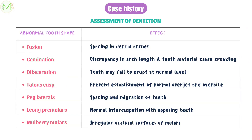Let's see what abnormal tooth shapes are and what effect they have orthodontically. Fusion of teeth will lead to spacing in the dental arches. Gemination will lead to discrepancy in arch length and tooth material, causing crowding. In dilaceration, the tooth may fail to erupt at the normal level. In the case of talon's cusp, it prevents establishment of normal overjet and overbite. Peg laterals will cause spacing and migration of teeth. Leong premolars have normal intercuspation with opposing teeth, and if mulberry molars are present, they cause irregular occlusal surfaces of molars.